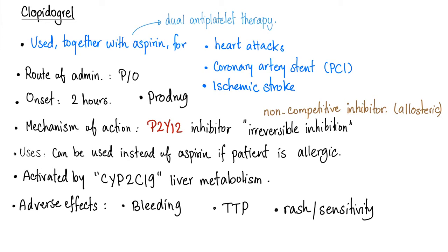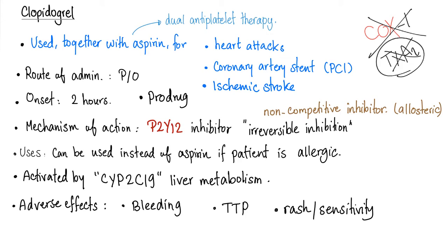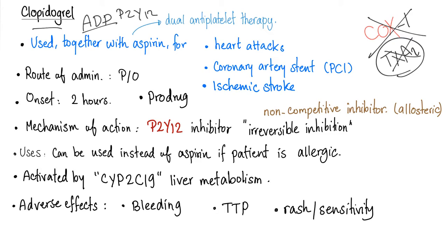P2Y12 receptor inhibitors are clopidogrel, prasugrel, ticlopidine, and ticagrelor. Clopidogrel is used together with aspirin, because aspirin is antiplatelet — it inhibits cyclooxygenase-1, and when you have no cyclooxygenase-1, you have no thromboxane A2. The two whistleblowers are thromboxane A2 and ADP. Aspirin inhibits thromboxane A2, while clopidogrel inhibits ADP from binding to the P2Y12 receptor. Aspirin plus clopidogrel is a powerful combination called dual antiplatelet therapy.